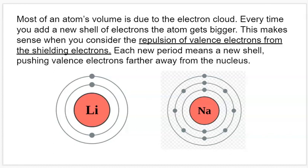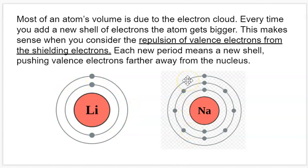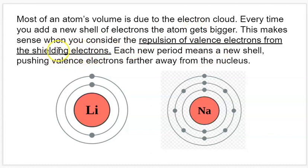You can think about the nucleus as being a really small, dense marble in the center of the atom, and the electron cloud as a big, fluffy cloud that the marble is in the center of. The electron cloud makes up most of the volume, so most of our size considerations are going to be related to the electron shells. As we go from lithium to sodium, they're in the same group, and we notice that we get a new shell of electrons — lithium has two shells, whereas sodium has three. Shielding electrons are all of the inner shell electrons, the inner core electrons.